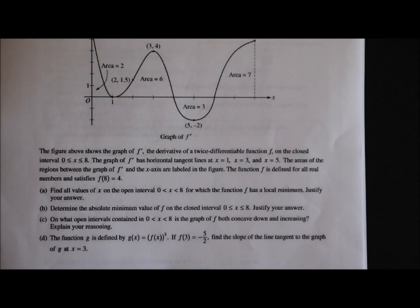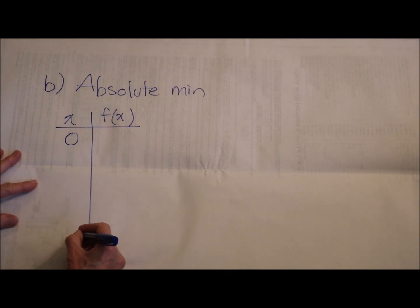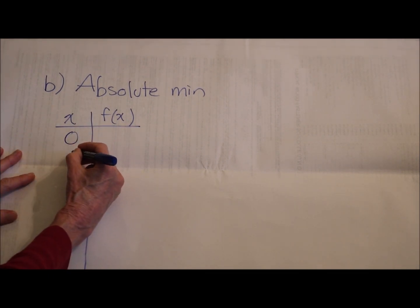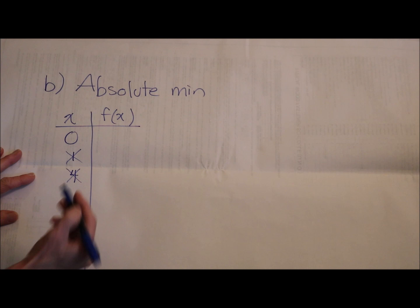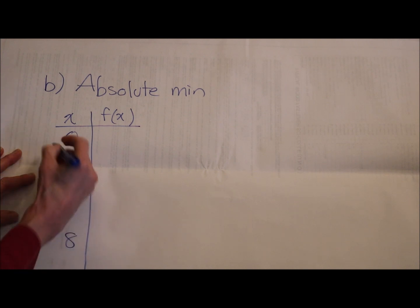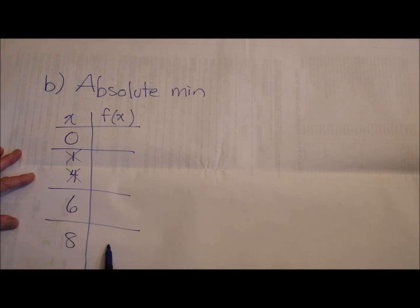Part B: Determine the absolute minimum value of f on the closed interval from 0 to 8. Justify your answer. For part B, I'm looking for an absolute min. Remember, absolutes can happen at critical points or at endpoints. So I have my endpoints 0 and 8. I have my critical point at 1 and at 4, but those weren't even relative min, so I don't have to worry about those. But 6 is a candidate. So I need to find the y values of f of x for when x is 0, when x is 6, when x is 8.